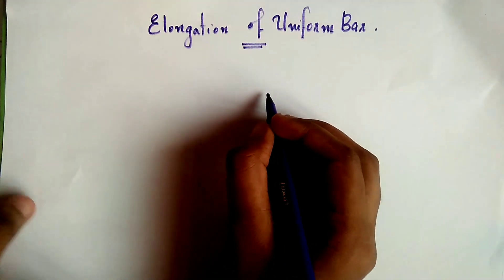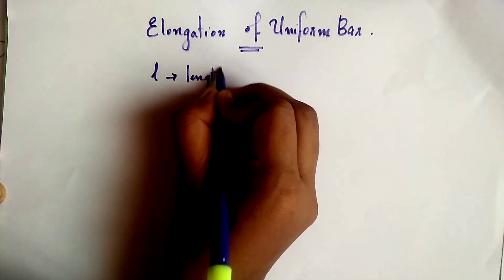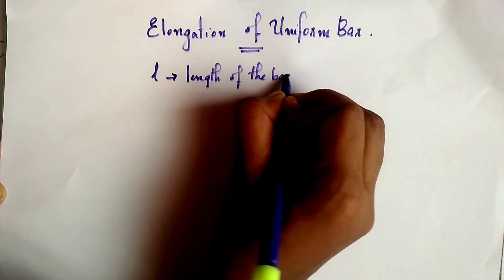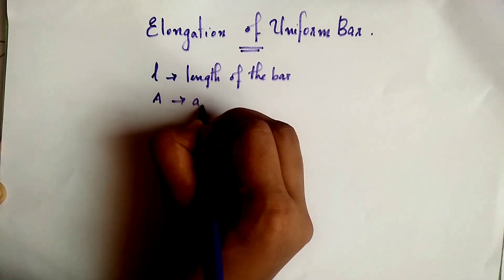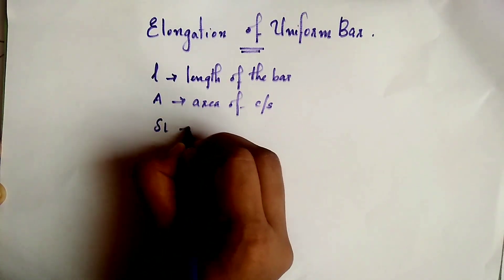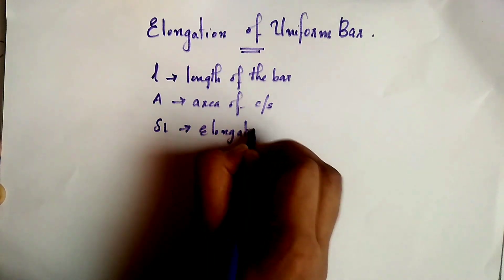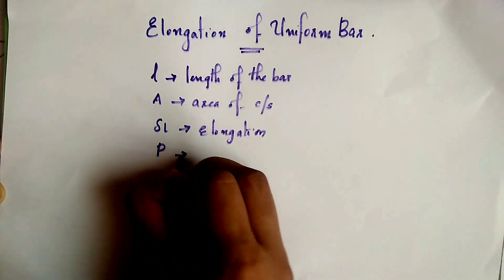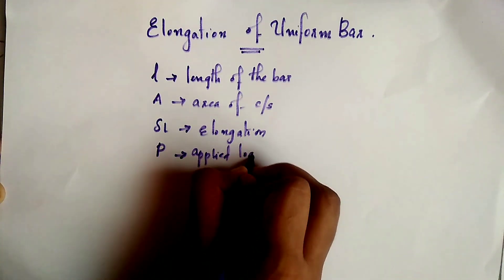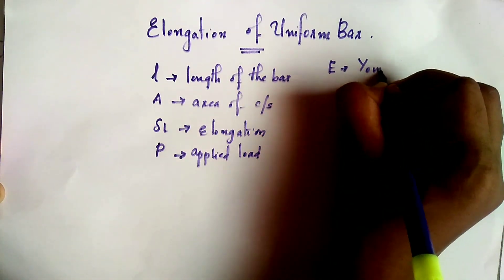The length of the bar is L, and capital A is the area of cross-section. Delta L is the elongation. We will apply load P — P is the applied load. E, or Young's modulus, is the modulus of elasticity.